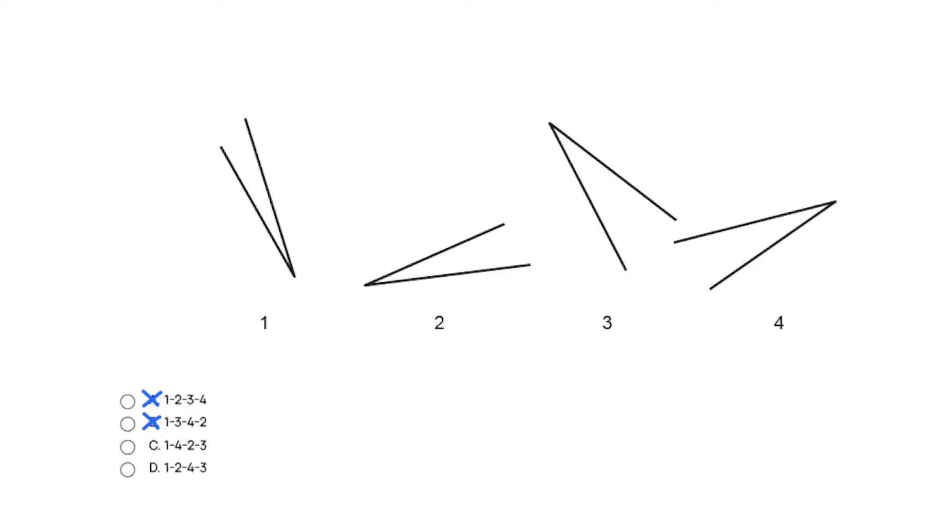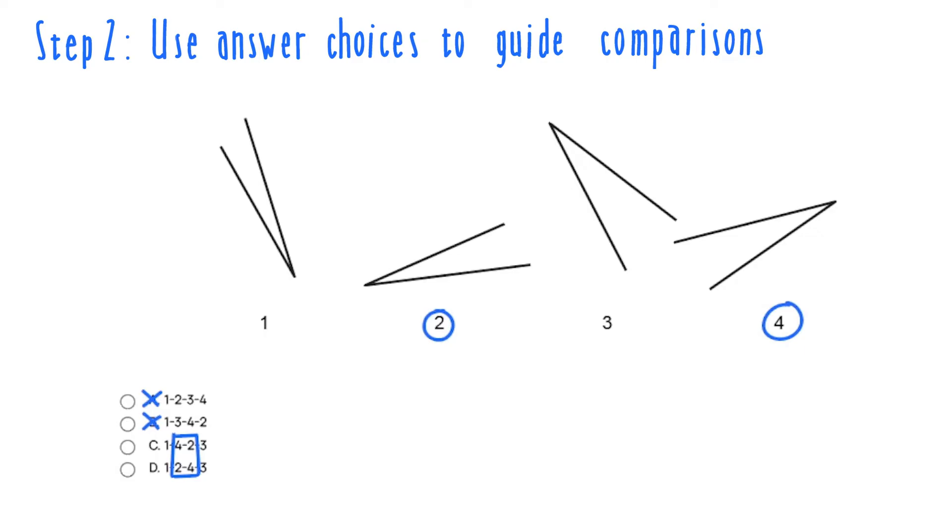The second step is to use the remaining answer choices to figure out which angles we still need to compare in order to find our correct answer. To finish the question we'll have to compare angle 2 and angle 4. I'll get into some more detailed strategies about how to compare individual angles in a later video. So for now we can just see angle 2 seems a little bit thinner, a little bit sharper than angle 4, so we can determine that it's likely the smaller of the two.